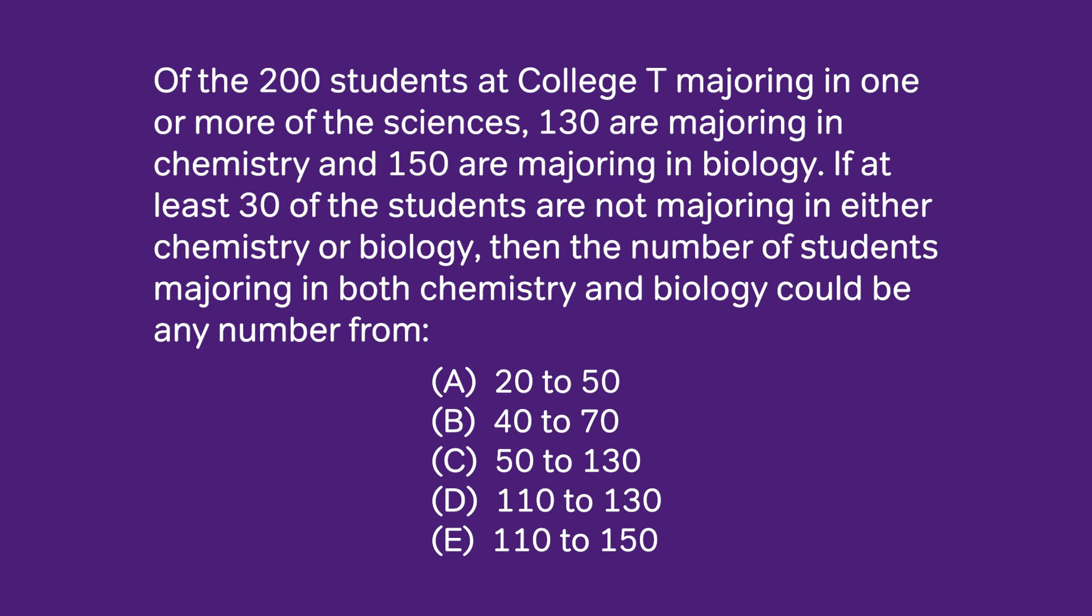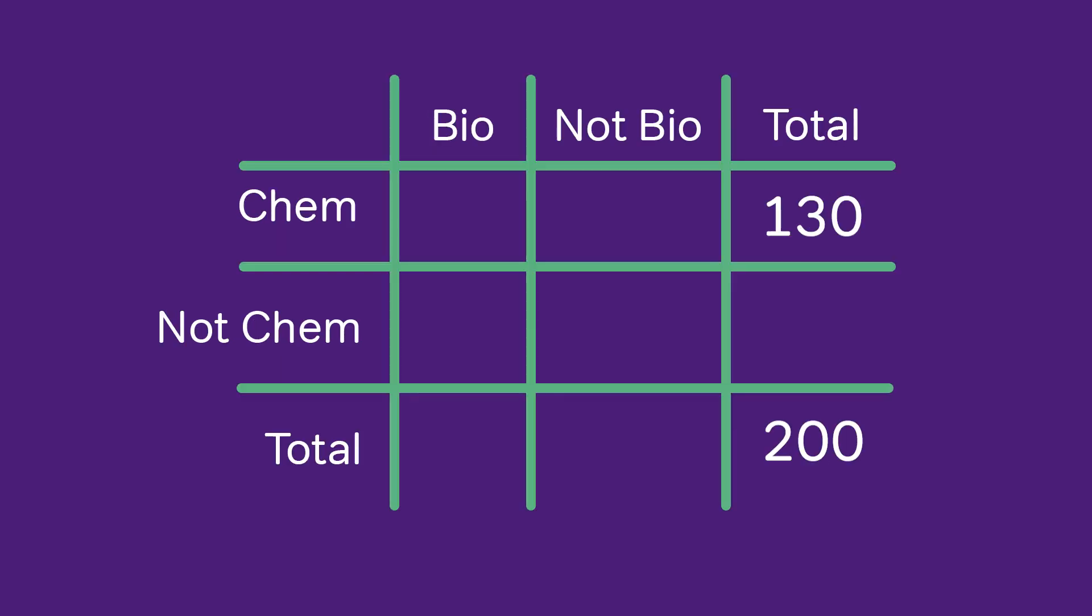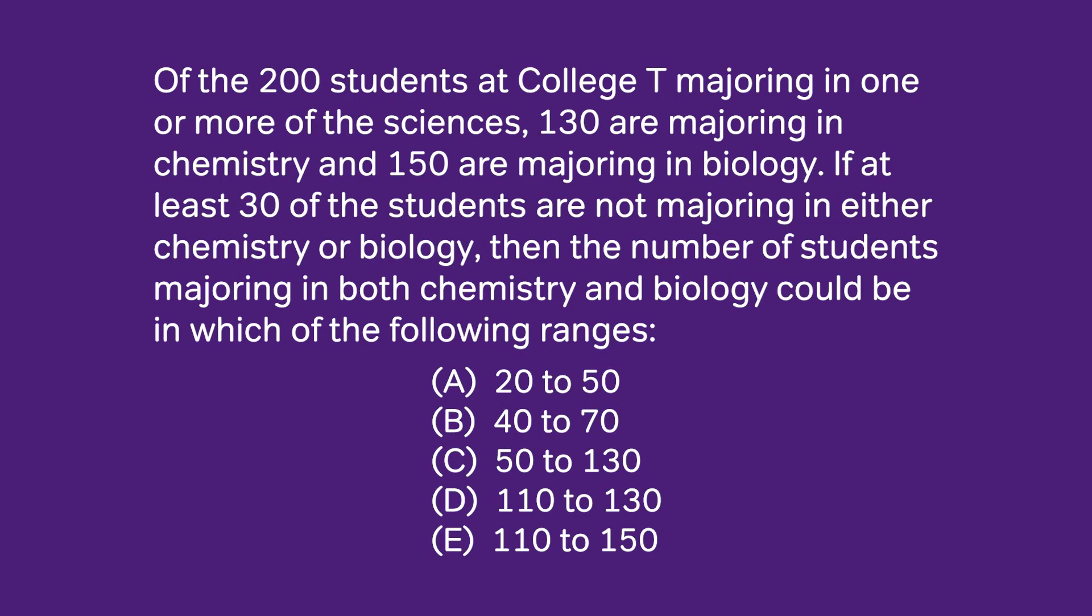Of the 200 students at College T majoring in one or more of the sciences, 130 are majoring in chemistry and 150 are majoring in biology. If at least 30 of the students are not majoring in either chemistry or biology, then the number of students majoring in both chemistry and biology could be in which of the following ranges.